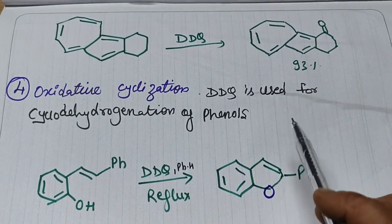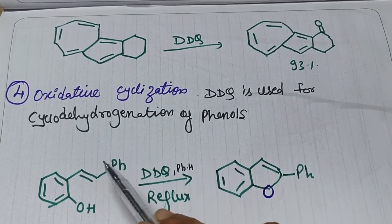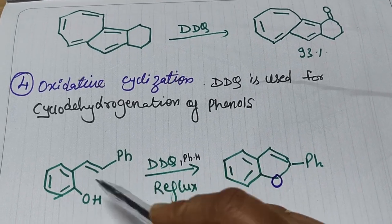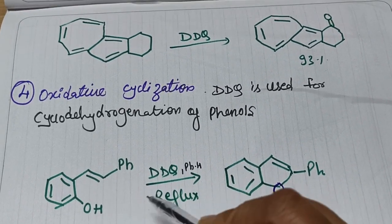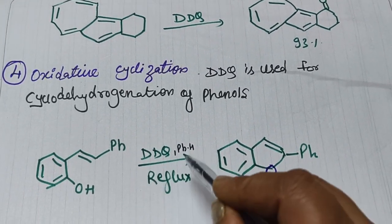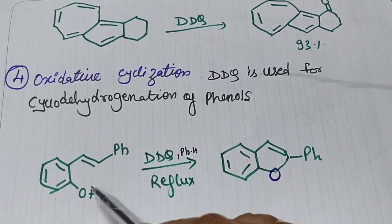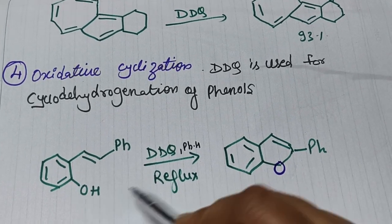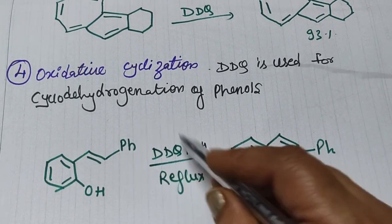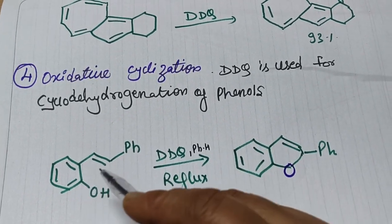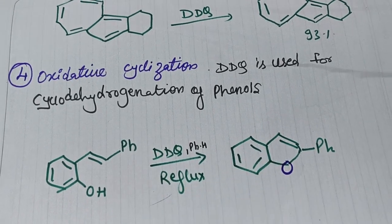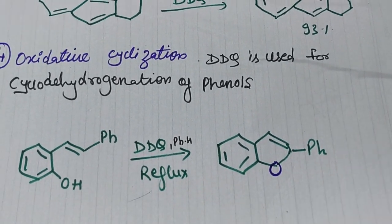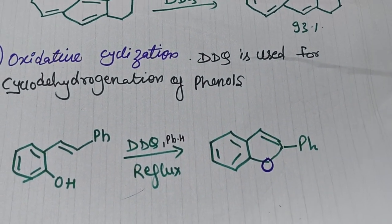Oxidative cyclization is another important application. DDQ is used for the cyclo-dehydrogenation of phenols. When DDQ reagent is used with a phenol, ring closure occurs and one oxygen atom becomes part of the cycle — this is called cyclo-dehydrogenation of phenols — giving the corresponding product.